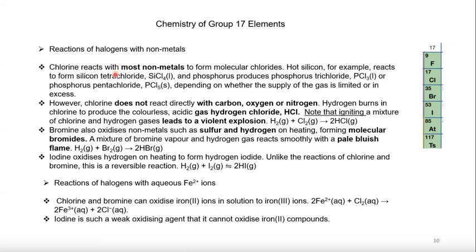Reactions of halogens with non-metals: most non-metals react with halogens. Silicon reacts with chlorine to form silicon tetrachloride, used in making many organic compounds. Phosphorus reacts with chlorine to first give phosphorus trichloride (a liquid), and with excess chlorine gives phosphorus pentachloride. Note that chlorine does not react directly with carbon, oxygen, or nitrogen. Hydrogen reacts with chlorine to form hydrogen chloride, and ignition of the mixture causes a violent explosion.